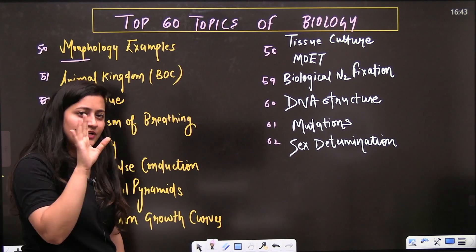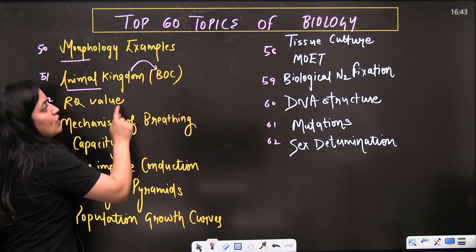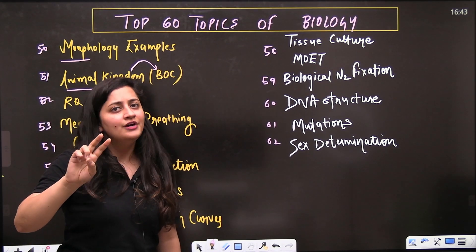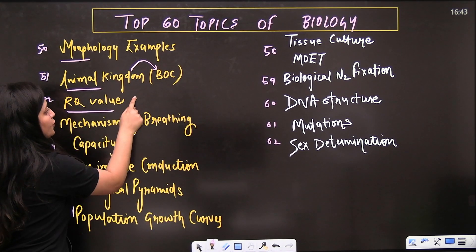From morphology, obviously examples are important. Soon I'll share some tricks to remember these examples as well. Then comes the animal kingdom - from animal kingdom, if you understand basis of classification and the name of the phylums, you'll be able to solve one or two questions from this particular chapter. Then comes the RQ value.